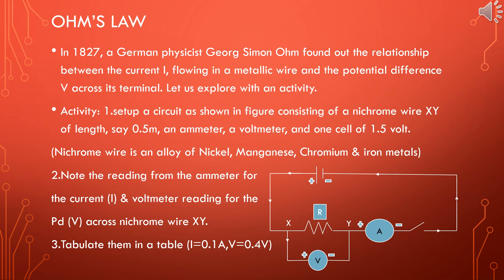Activity: as I read out the points, please check them with the circuit diagram given below. Set up a circuit as shown in the figure, which consists of a Nichrome wire XY of length 0.5 meter. An ammeter is connected in series, and a voltmeter is connected in parallel with the resistance R, and one cell of 1.5 volts. Nichrome wire is an alloy of nickel, manganese, chromium, and iron metal.